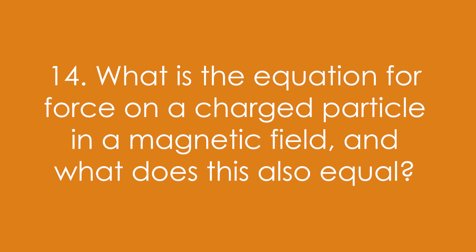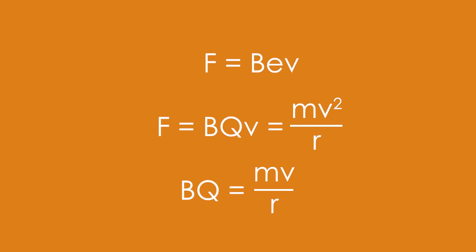Question 14: What is the equation for force on a charged particle in a magnetic field and what does it also equal? It's F = BQV. We know that's supplying centripetal force, so it also equals mv²/r. Cancelling a v, we get BQ = mv/r, and we can do lots with that equation.